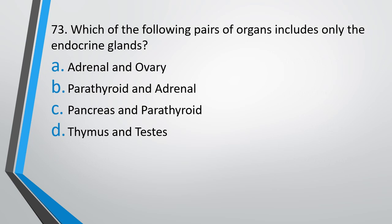Question No. 73: Which of following pairs of organs include only the endocrine glands? Adrenal and ovary, parathyroid and adrenal, pancreas and parathyroid, thymus and testis. The correct answer is option B, parathyroid and adrenal.